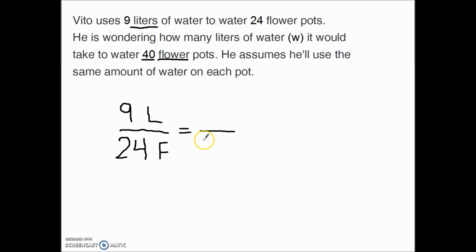So the big question is where does the 40 go? It's 40 flower pots, so it has to go here at the bottom. So 40, and that F is for flower pots, and then the W is how many liters of water. So that would make sense, so liters would end up matching with liters here.